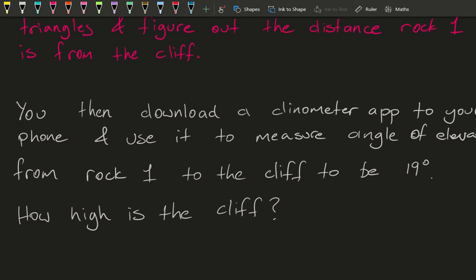Then once you've done that, you're going to pretend that you've downloaded a clinometer app to your phone. I've got one of those, they're widely available. And you use this to measure the angle of elevation from rock one to the cliff. And we're going to assume that we've measured it to be 19 degrees. So based on the distance you've figured out and the angle of elevation of 19 degrees, the question is how high is the cliff? That's step two.